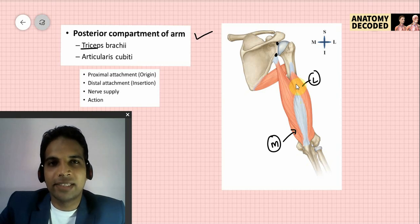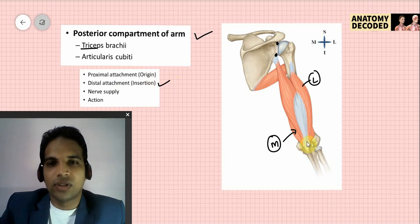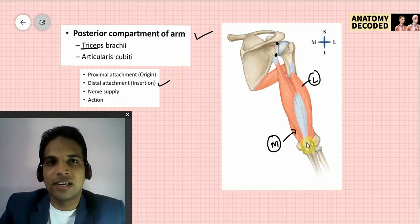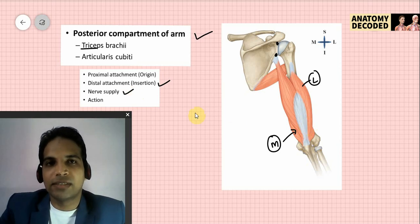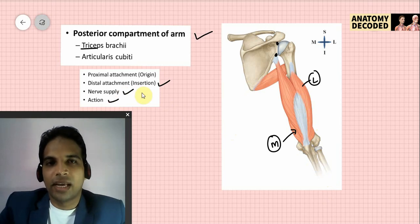The distal attachment of the triceps is on the ulna — specifically, on the superior surface of the olecranon process. The nerve supply is by the radial nerve, which is the nerve of the posterior compartment of the arm, as well as the posterior compartment of the forearm. The action of the triceps brachii is that it is the chief extensor of the elbow joint.